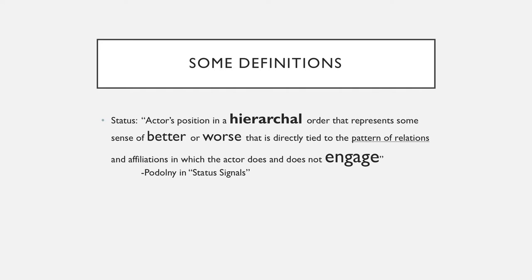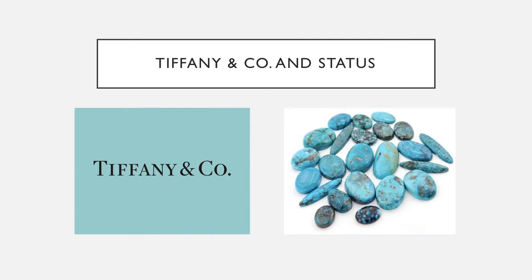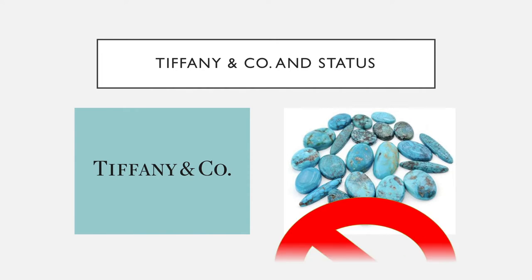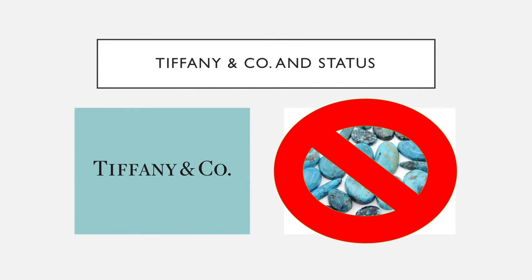But first, we should probably define status. Status refers to an actor's position in a hierarchical order — in this case, the actor is a business or company — which essentially represents some sense of better or worse that is directly tied to the pattern of relations and affiliations in which the company does and does not choose to engage. This idea can be illustrated with the example in class about Tiffany and their choice to not sell turquoise because of turquoise's affiliation with a lower status.